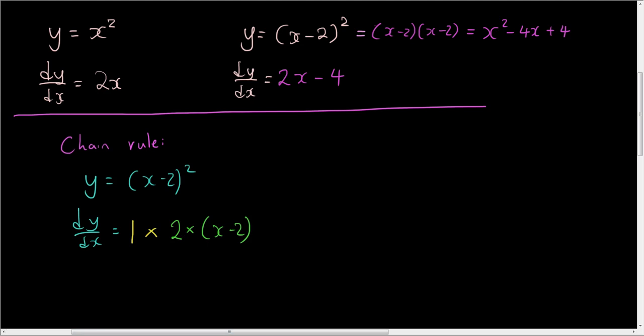And if you simplify all of that, then that gives you 2x minus 4. Alright, if you expand this in. Alright, 1 times 2 is 2, 2x minus 4. So this is exactly the same as this. Alright, but we did not have to expand the bracket.